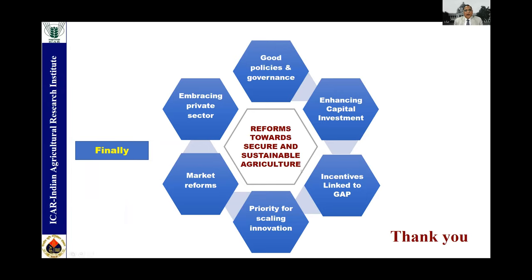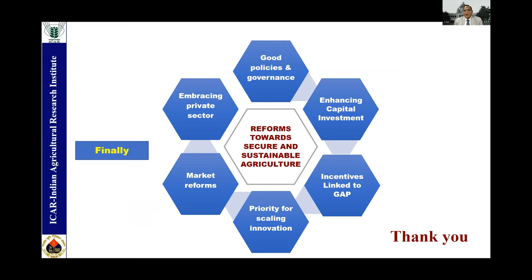Overall, the reforms for secure and sustainable agriculture include enhancing capital investment, incentives linked to good agricultural practices, priority for scaling innovation, market reforms, embracing private sector and good governance. These are extremely important. If I have maybe another two minutes, I will touch on some slides on rice, which is my subject.